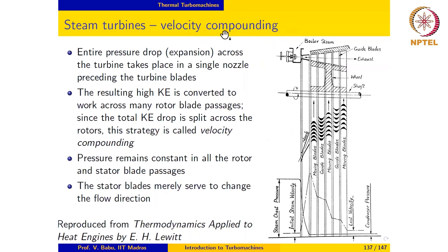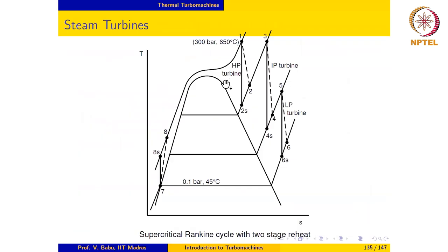The term compounding refers to a stepwise or incremental change of whatever is being compounded. So velocity compounding refers to the fact that velocity change takes place in the turbine in an incremental or stepwise manner. The entire pressure drop across the turbine takes place in a single nozzle preceding the turbine blades. Keep in mind that we are talking about strategies for any one individual turbine — either the HP, IP, or LP turbine.